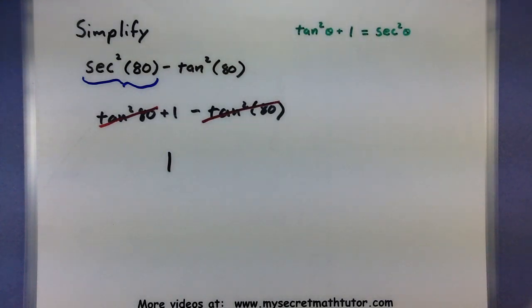So it's good to know all of these Pythagorean identities, but especially the first one, sin²θ + cos²θ = 1. If you'd like to see some more videos, please visit MySecretMathTutor.com.